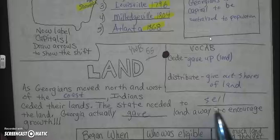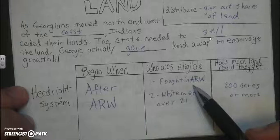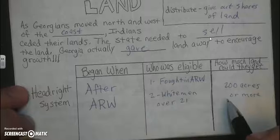One way that they gave land away was the head right system. It began after the American Revolutionary War. Anyone who fought in the war and white men over 21 were eligible to receive this free land, and they could get 200 acres or more.